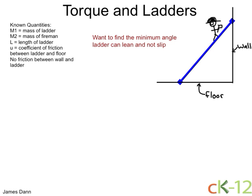The known quantities are the mass of the ladder, the mass of the fireman, the length of the ladder which will give the symbol L, the coefficient of friction between the ladder and the floor, and note that there is no friction between the ladder and the wall.